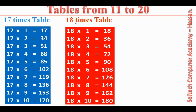18 times table. 18 ones are 18. 18 twos are 36. 18 threes are 54. 18 fours are 72. 18 fives are 90. 18 sixes are 108. 18 sevens are 126. 18 eights are 144. 18 nines are 162.